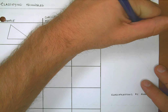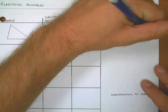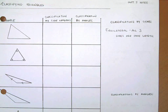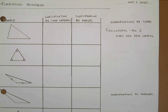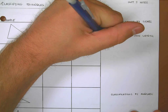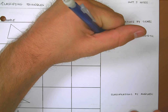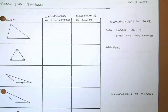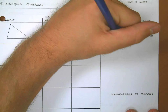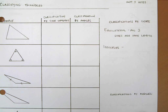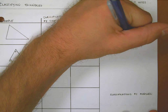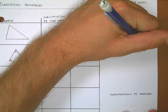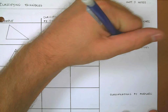The second classification is if two of the three sides have the same length. This is probably one of the ones that's easier to forget — it's called the isosceles triangle. Notice how to spell that; you might want to pause the video and learn how to spell it. Two of the three sides are the same length.